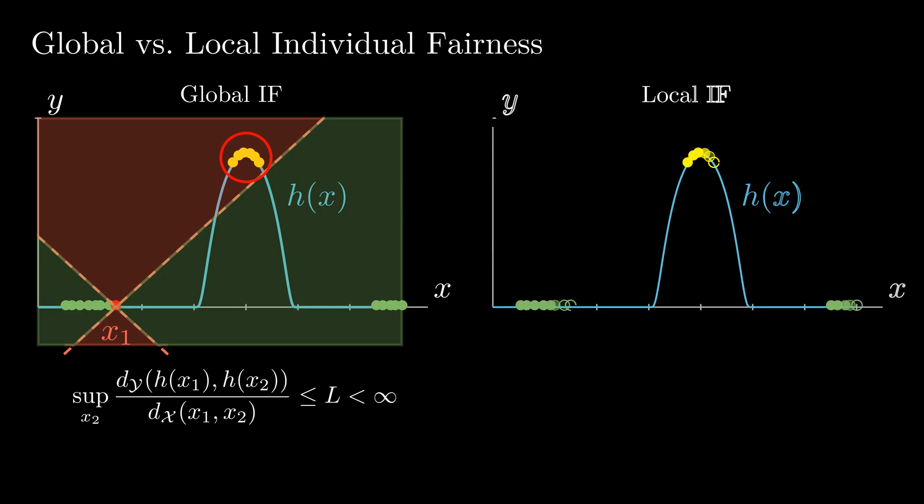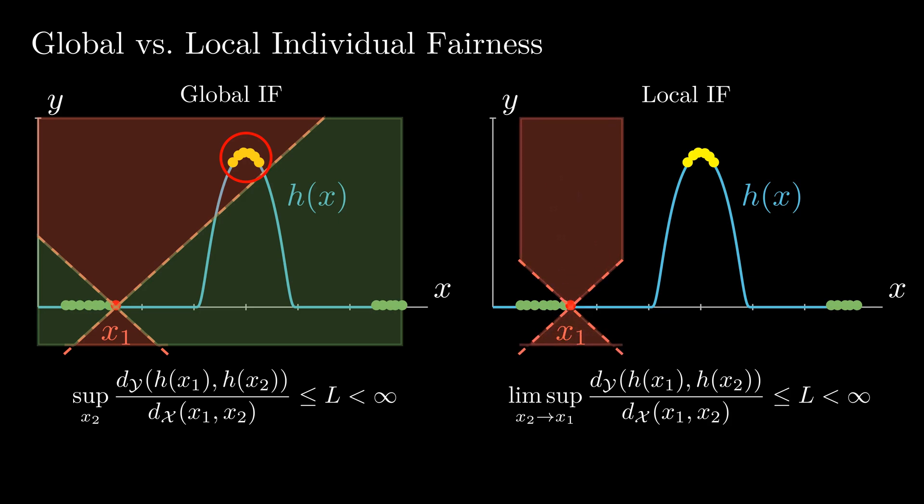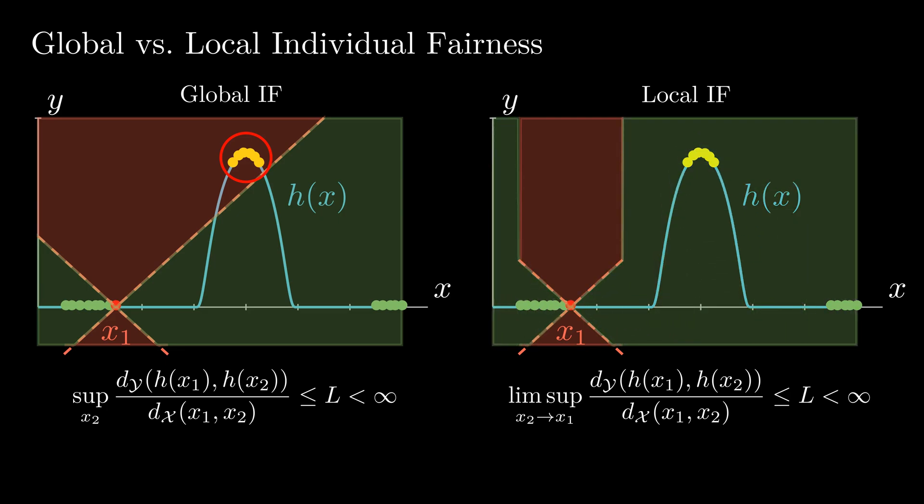Let us now compare this to local individual fairness. Local individual fairness requires only that those points which are close to x1 in the input space, satisfy the Lipschitz constraint. We display this local constraint for a proximity of 1 and mark the regions which would not satisfy this constraint in red, while we mark the regions satisfying it in green. Note that here, the yellow points satisfy the individual fairness because they are far away from the green points and thus are not considered similar.